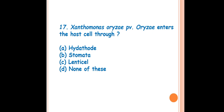Question 17: Xanthomonas oryzae pv. oryzae enters the host cell through which route? Xanthomonas oryzae pv. oryzae is the causal organism of bacterial leaf blight of rice. This bacterium enters the host cell through natural openings or wounds, as bacteria generally do not possess mechanical forces to penetrate host cells directly.